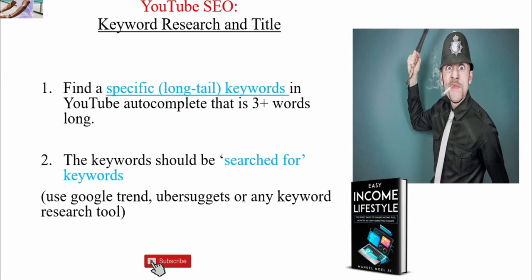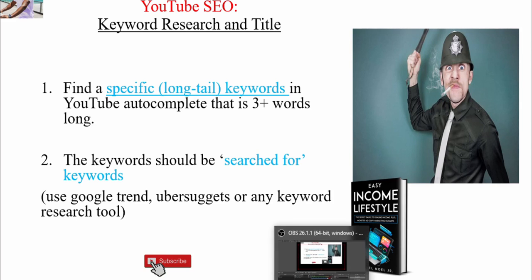Moving along to point number two, which is closely tied to point number one: the keyword should be one that people are actually searching for. You don't want to go for a keyword that nobody is searching for. Some tools you can use include Google Trends, Ubersuggest, or any other keyword research tool to know whether your keyword is being searched for. I previously looked at 'cameras for YouTube videos,' so let's go to Google Trends and see if this is something people are searching for right now.